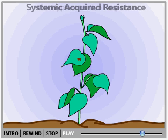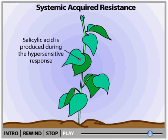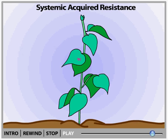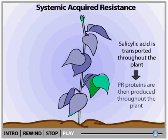A phenomenon called systemic acquired resistance may then follow the hypersensitive response. In systemic acquired resistance, the entire plant increases its resistance to a wide range of pathogens. In one model for how this occurs, a compound similar to aspirin called salicylic acid is produced during the hypersensitive response. Salicylic acid is transported from the infected tissue to the rest of the plant body, inducing cells throughout the plant to produce PR proteins, which then lie in wait to kill any pathogens that might enter the plant, immunizing the plant against a variety of pathogens.